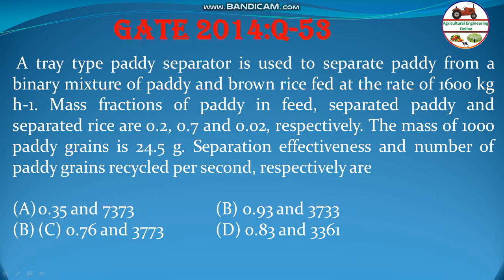A tri-tray type paddy separator is used to separate paddy from a binary mixture of paddy and brown rice at the rate of 1600 kg per hour. Mass fractions of paddy in feed, separated paddy and separated rice are 0.2, 0.7, and 0.02 respectively. The mass of 1000 paddy grains is 24.5 grams. Find the separation effectiveness and number of paddy grains recycled per second.